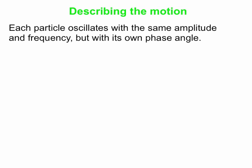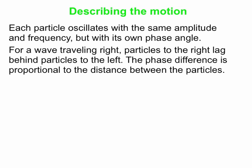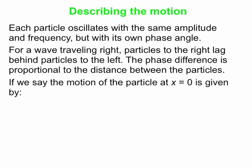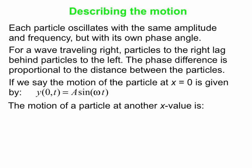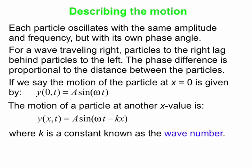When we describe the motion, we say each particle oscillates with the same amplitude and frequency but with its own phase angle. We saw the example of a wave traveling right, so particles to the right lag behind particles to the left, and the opposite would be true for waves traveling left. The phase difference is just proportional to the distance between the particles. Let's say the motion of the particle at x equals 0 is given by y as a function of x equals 0 and t is time, is simply A sin(ωt). Let's say we choose our starting time, so the phase is 0. Then the motion of a particle at a different x value is A sin(ωt - kx). So the phase is proportional to the distance between the particles. That's what x is. And k is our proportionality constant. We call k the wave number.